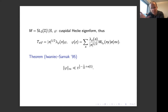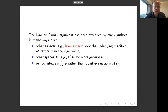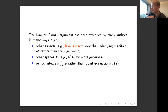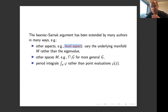Their result and method kicked off a whole industry — I think there are on the order of a hundred papers that have cited and built upon it. For example, people have generalized it to the level aspect, the subject of this talk, where instead of varying the eigenvalue, you vary the underlying manifold. Many have generalized to other spaces such as quotients of more general groups by arithmetic groups, and there are results bounding integrals of eigenfunctions over submanifolds rather than just pointwise values.